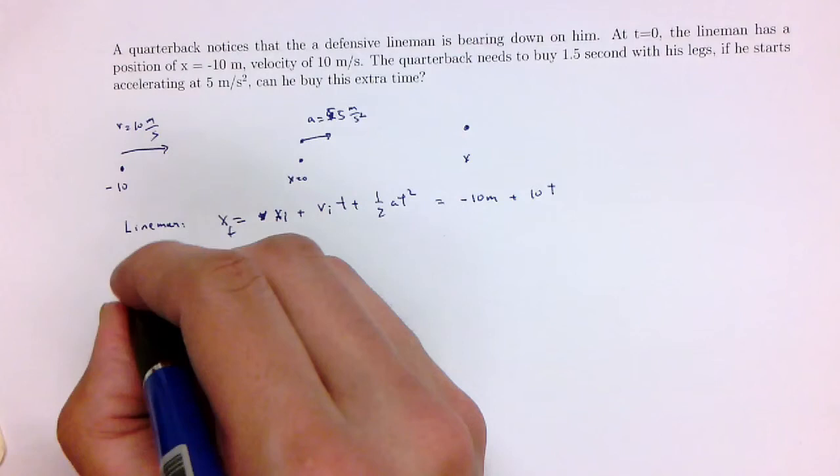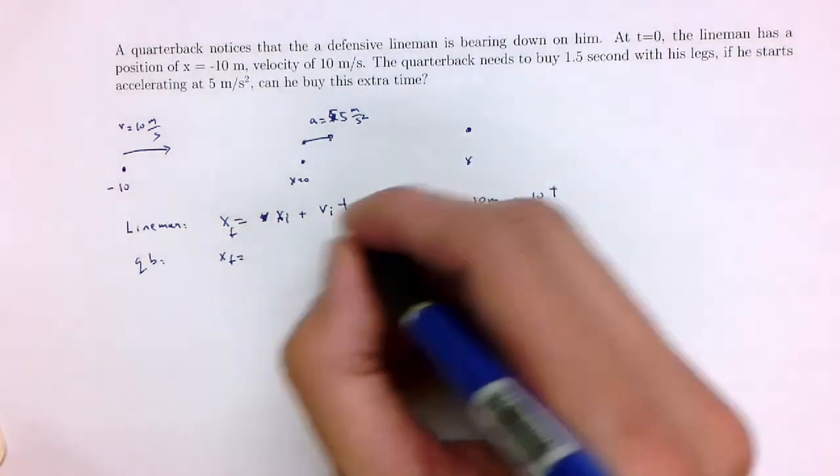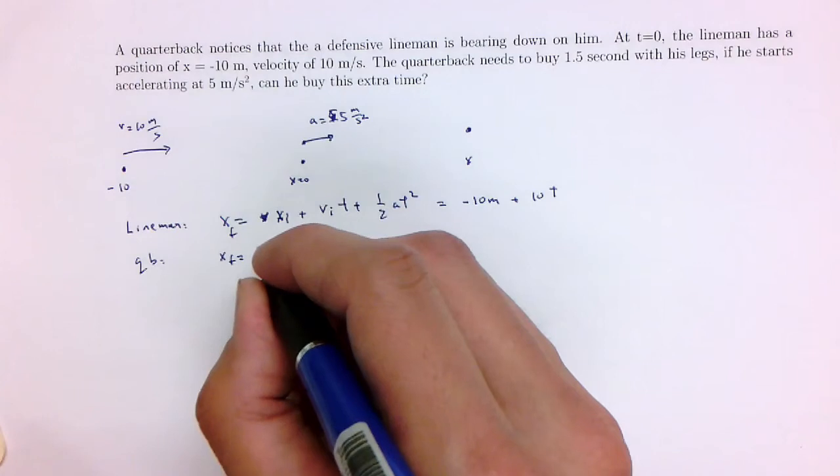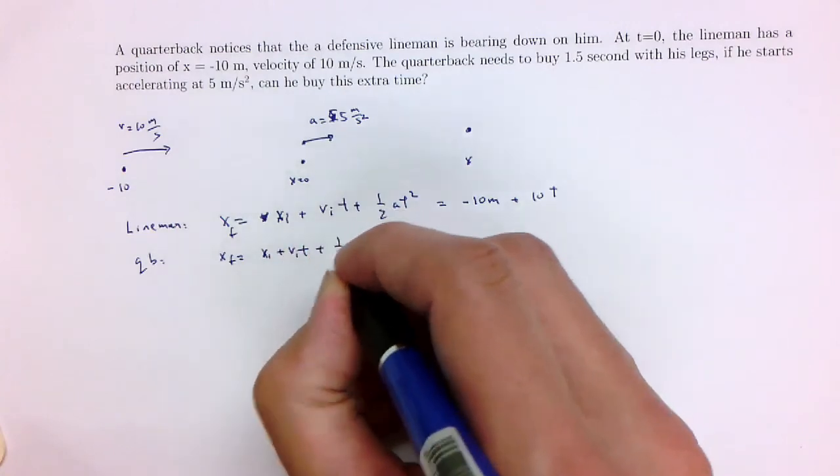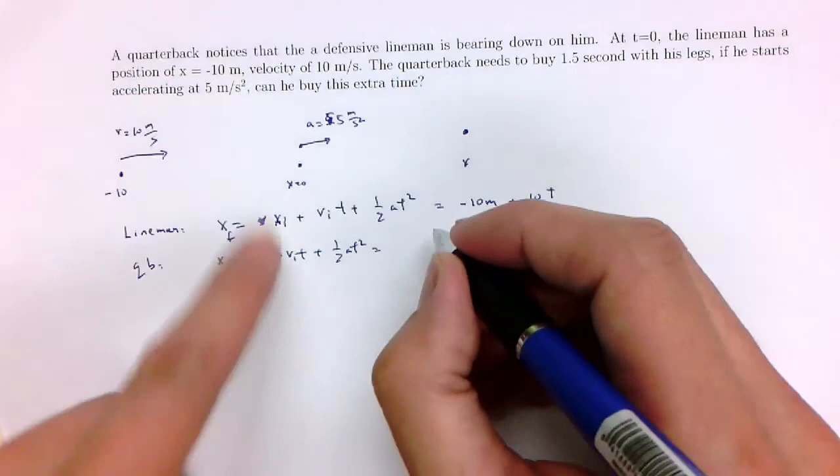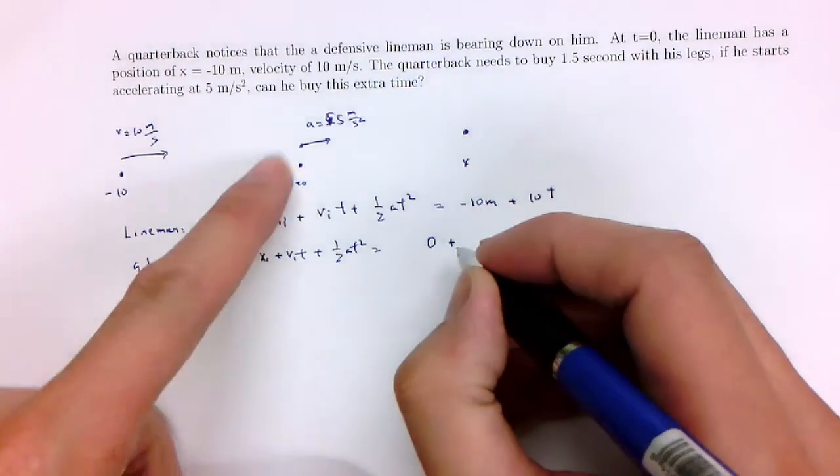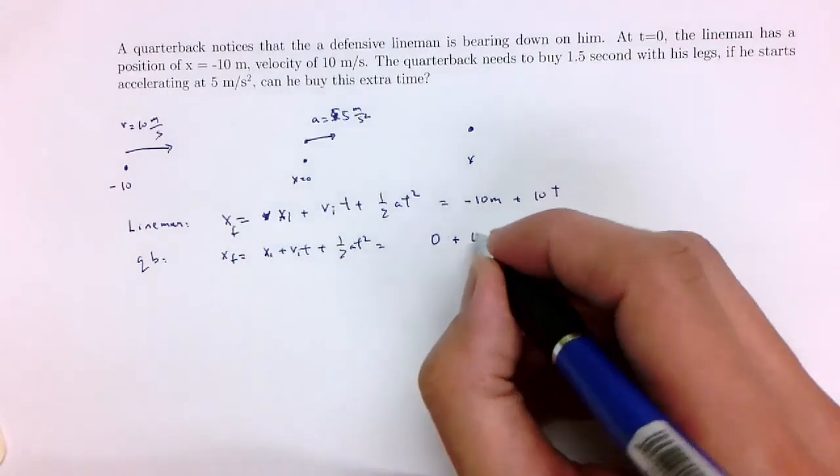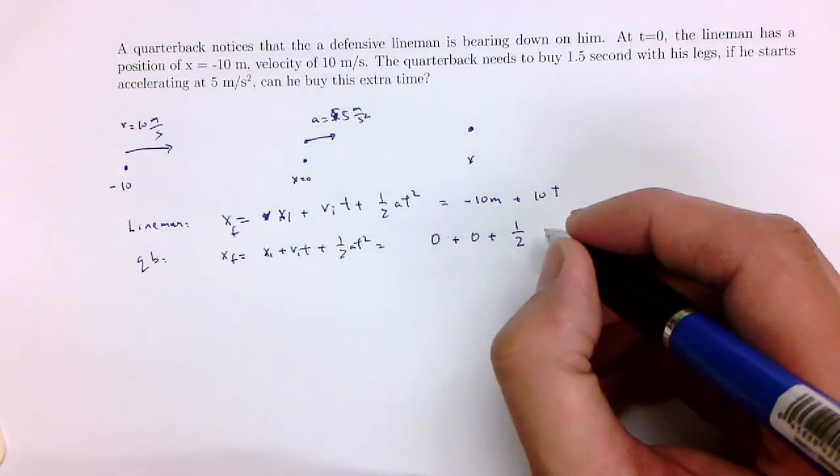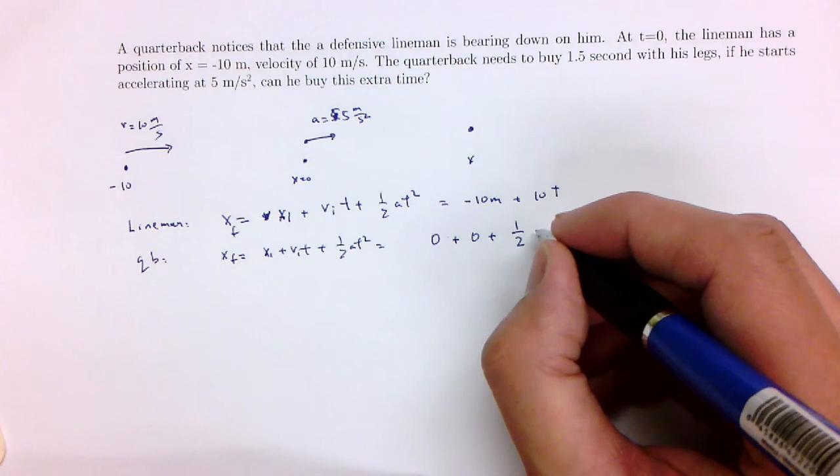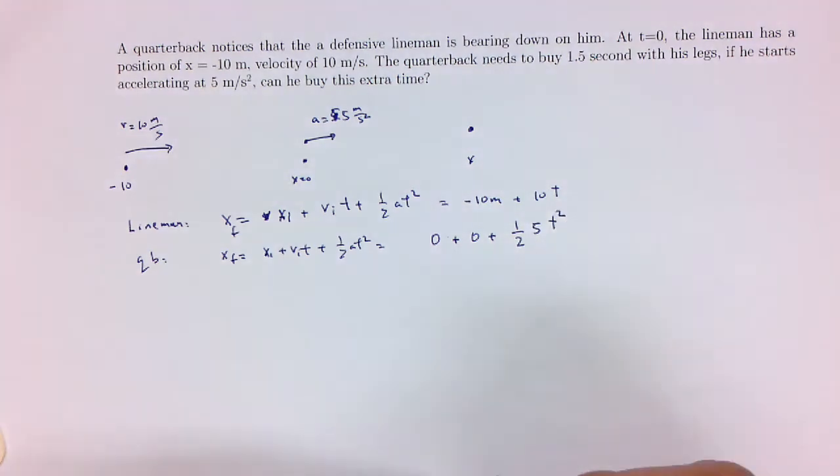And now for the QB. The x final is going to be equal to the initial position, plus v initial t plus one-half a t squared. Now the initial position is x equals 0, so that's just going to be 0. Plus the initial velocity is 0, so the quarterback starts at rest. Plus one-half times 5 times t squared, which is 2.5 t squared.